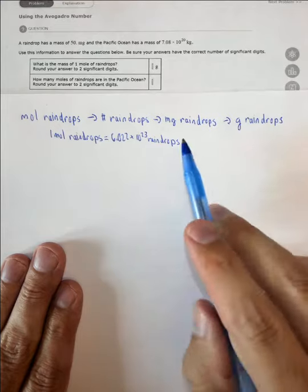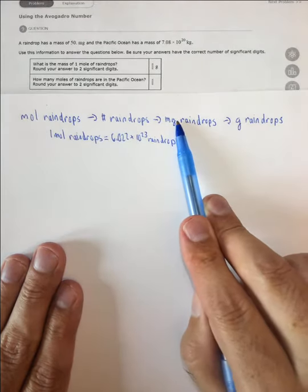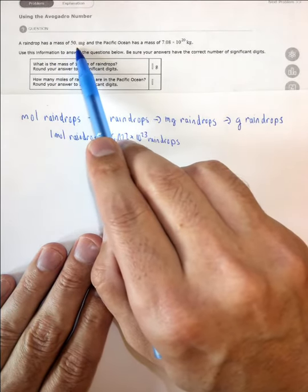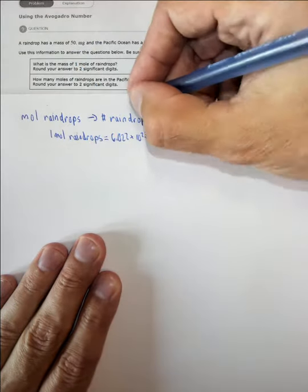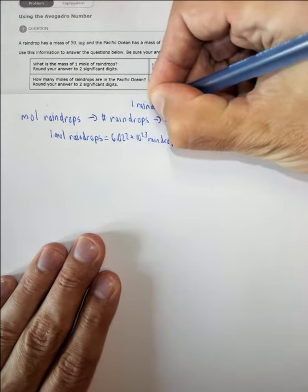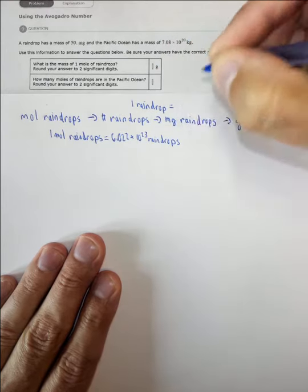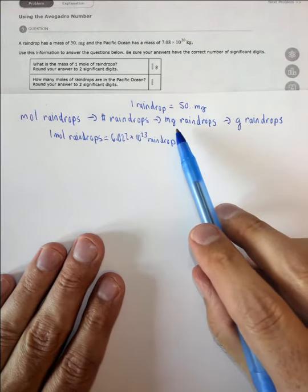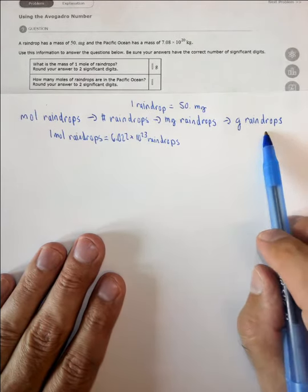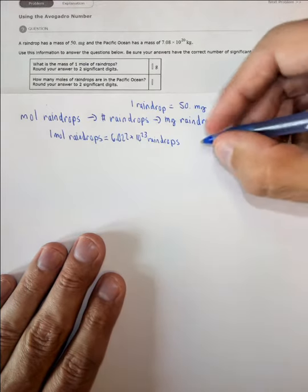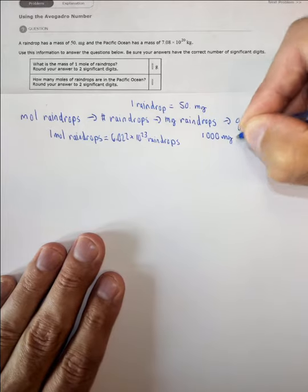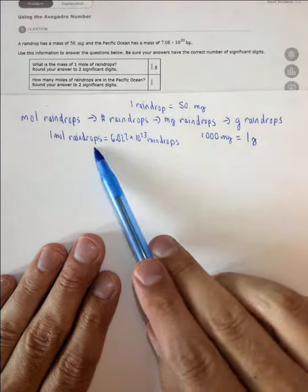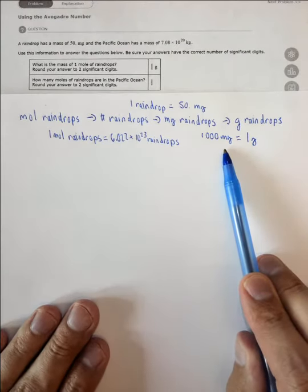We now need an equality that converts from number of raindrops to milligrams of raindrops. We have that — each raindrop has a mass of 50 milligrams, so one raindrop equals 50 milligrams. Finally, we need a conversion between milligrams and grams; this is a standard conversion: 1000 milligrams equals one gram. So we have our plan of attack and an equality for each piece of it.